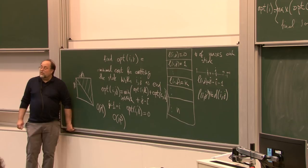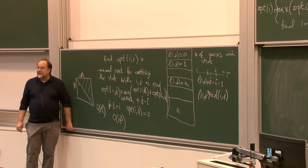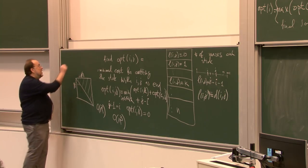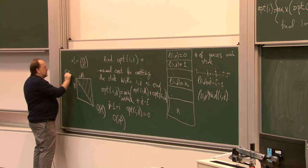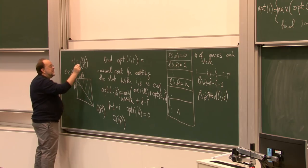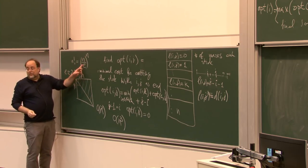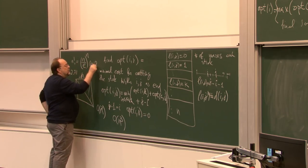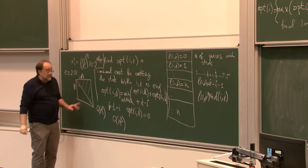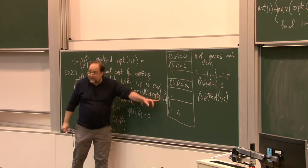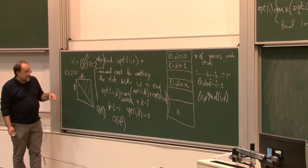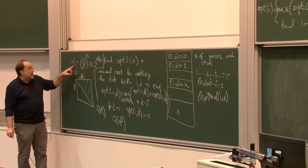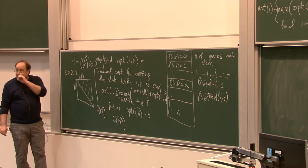Brute force: how many possibilities for cutting do you have to consider if there are n marks? n factorial, because any permutation. And n factorial is gigantic — it's approximately (n/e)^n, where e is approximately 2.718, so it's worse than 2^n. This is about 2^(n log n). So even though it's exhaustive search during the recursion, the resulting algorithm is only cubic, while brute force will cost you more than exponentially many steps.